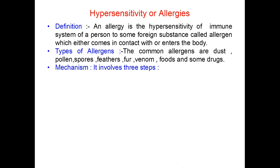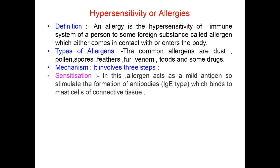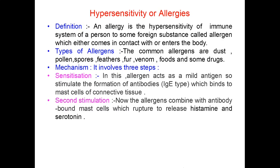Now the mechanism of allergies involves the following three steps. First is sensitization: allergens act as a mild antigen to stimulate the formation of IgE type of antibodies, which bind to the mast cells of connective tissue. Second, stimulation: when the allergen again comes in contact with the body, the allergens combine with antibody-bound mast cells, which rupture to release histamine and serotonin. The histamine causes hypersensitivity or allergy.